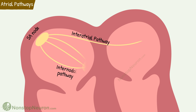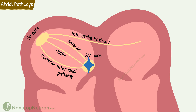Then we have internodal pathways between the SA node and the AV node. It includes the anterior internodal pathway, middle internodal pathway, and posterior internodal pathway. They curve through the anterior, lateral, and posterior atrial walls respectively and terminate in the AV node. They carry impulses from the SA node to the AV node.